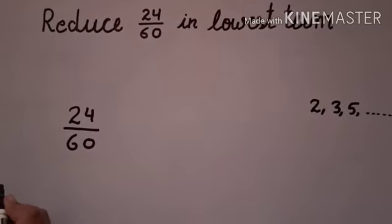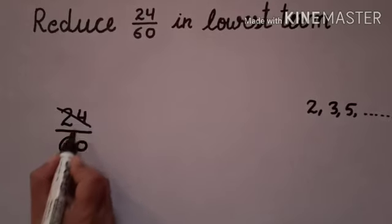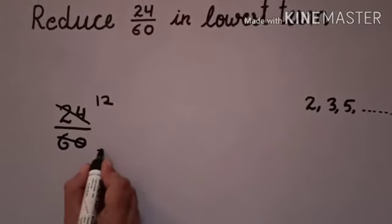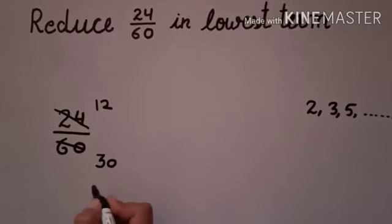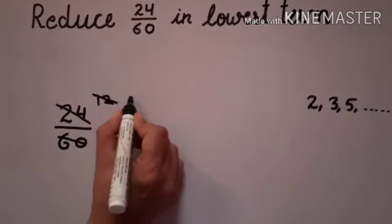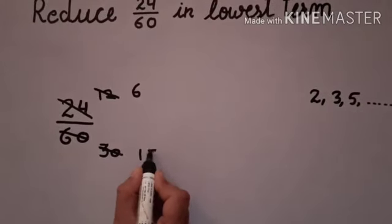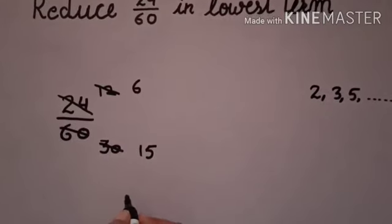Both numbers are even, so divisible by 2. We get 12 and 30 after dividing by 2. Further dividing by 2, we get 6 and 15.